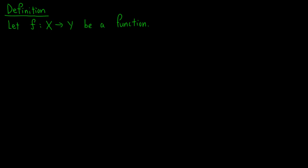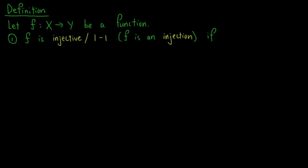Let f from X to Y be a function. We say that f is injective, or 1-to-1, or f is an injection, if for all elements x1 and x2 in X, x1 not equal to x2 implies that f of x1 is not equal to f of x2.